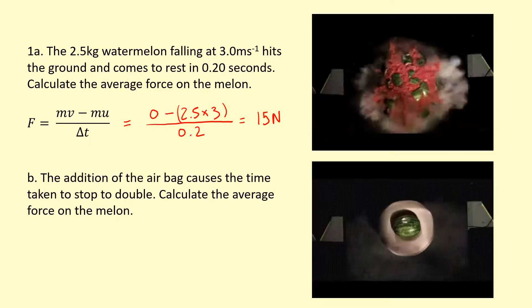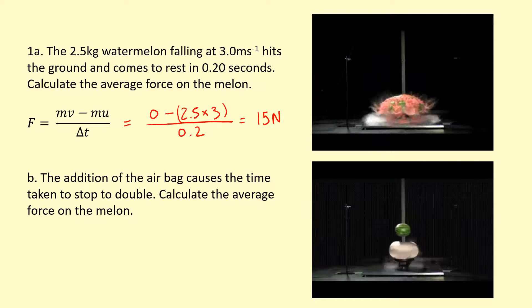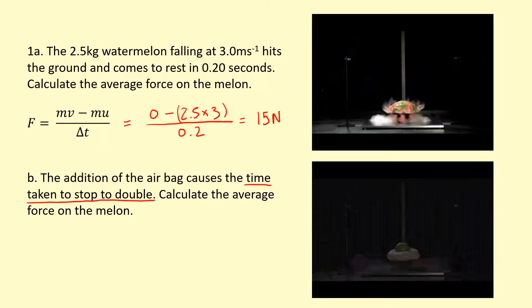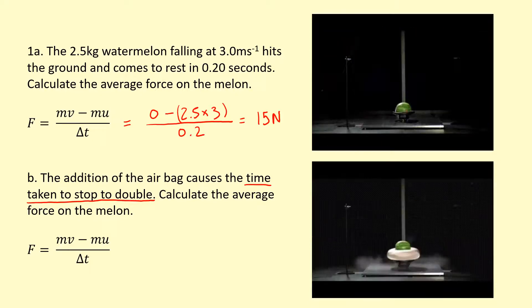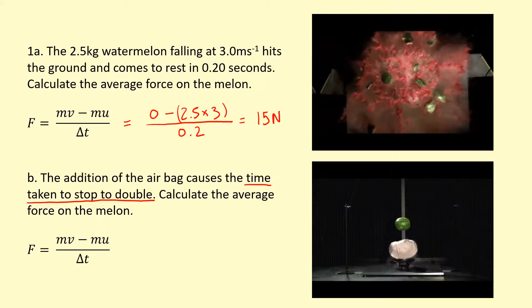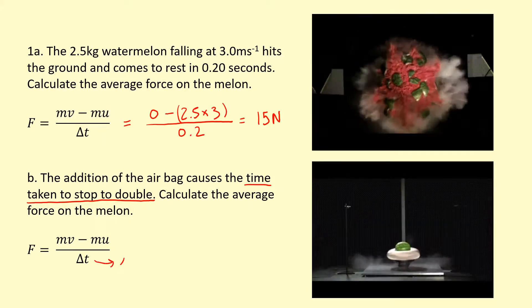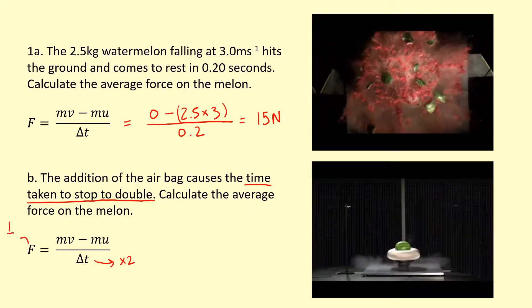So what happens if I use an airbag like this to double the time it takes for the melon to stop? So we've increased the time. I don't have to do the maths again. Well, I know that the force is inversely proportional to the time, so this is going to be times 2 at the bottom. Now, because that's the denominator, the force is going to become a half.